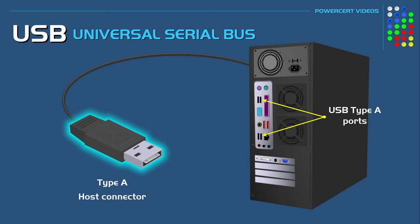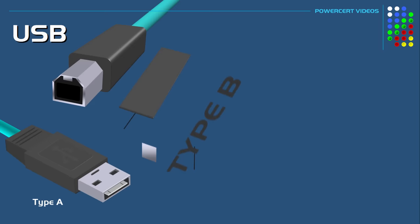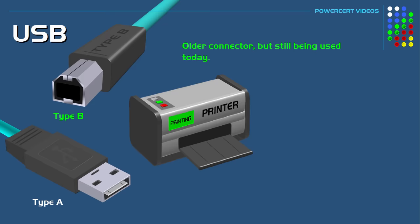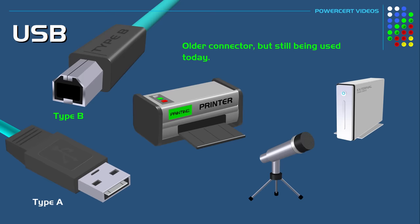On the other end of the USB cable, you might find different types of connectors, such as the Type B connector. The Type B connector is a square design with beveled corners on top. This is also an older connector, but it's still being used today. This type of connector is what you would plug into most printers today, but it's also used on other devices such as external hard drives and USB microphones.